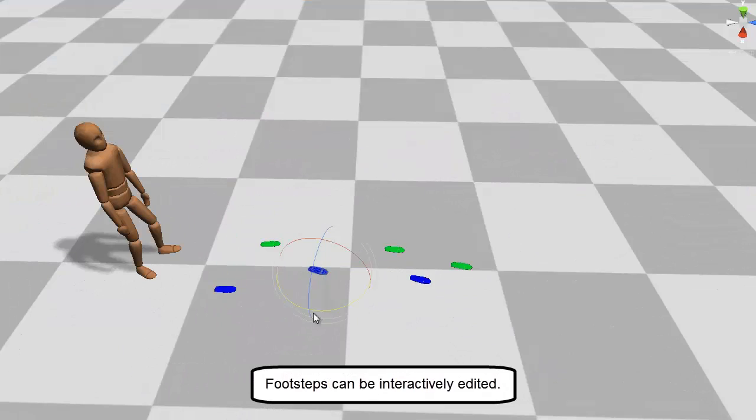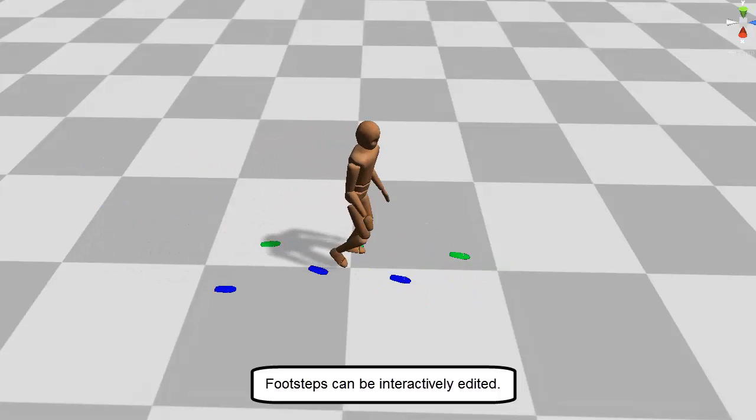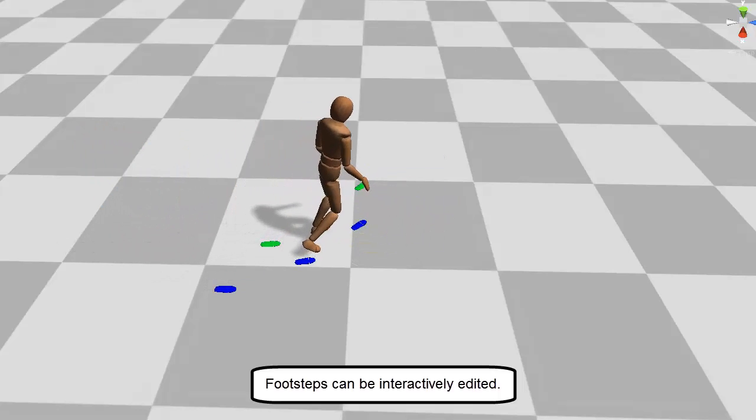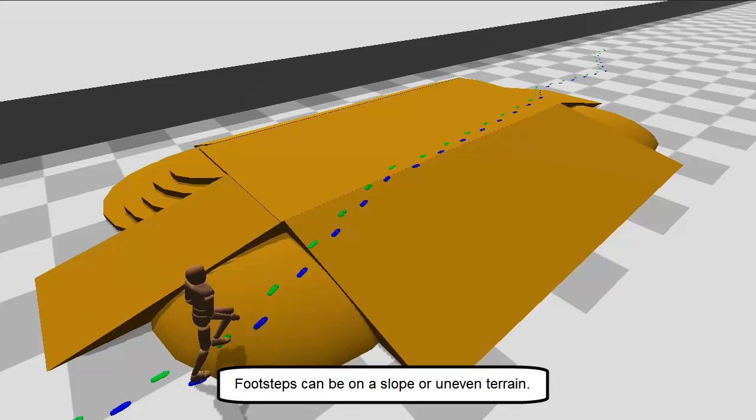The user can manually edit trajectories. We can handle uneven terrain.